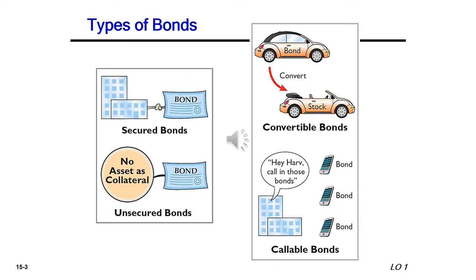Bonds can take multiple forms. We have secured bonds, which have collateral to back them up, so in case of default the investors are guaranteed to get their investment back through the sale of that asset. On the other hand, unsecured bonds have no assets as collateral. We also have convertible bonds, where the bond can be converted into stock or stock options, and callable bonds, which give the issuer the right to call them back at any stage, settle them in full, and terminate those bonds.